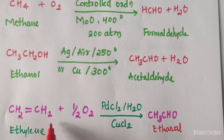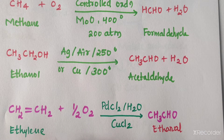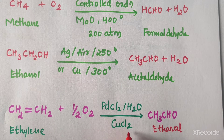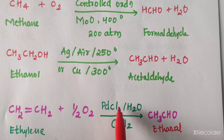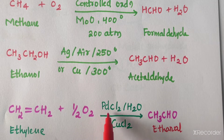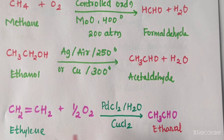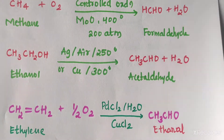How we can oxidize ethylene using palladium chloride and copper chloride to obtain acetaldehyde — these two catalysts are very important and you should remember them. Palladium chloride and copper chloride: this process is called Wacker's process.